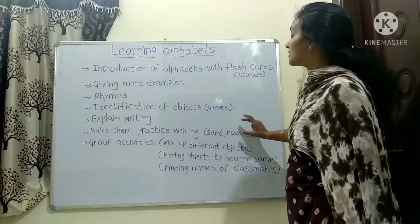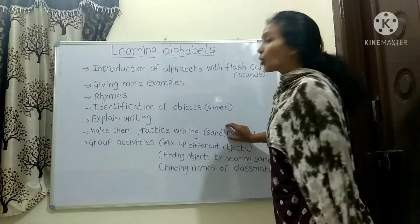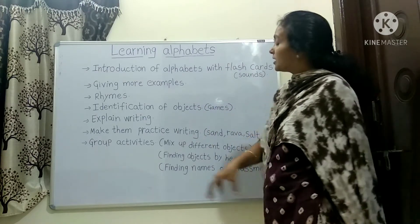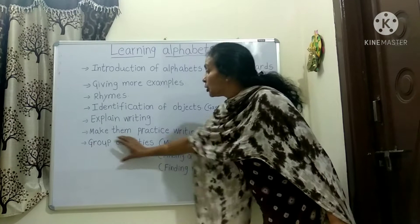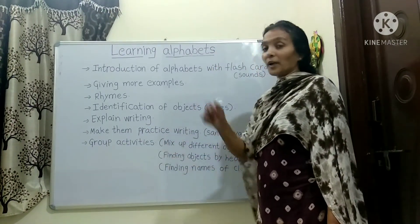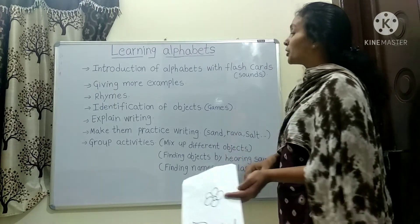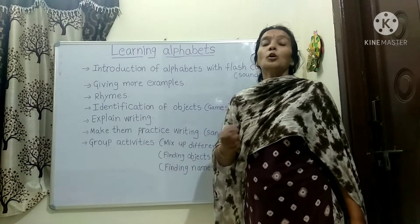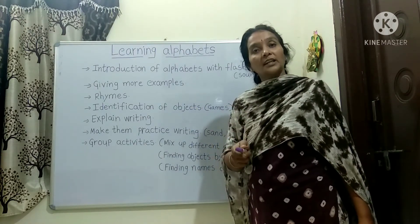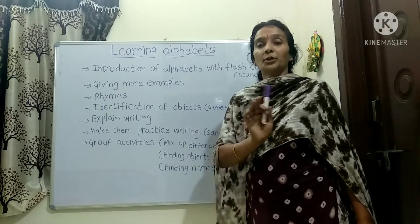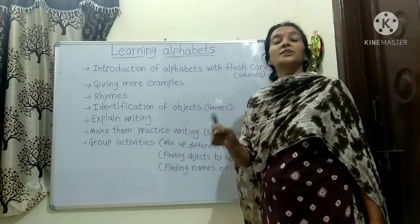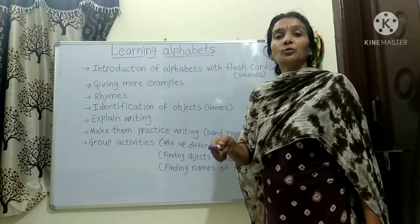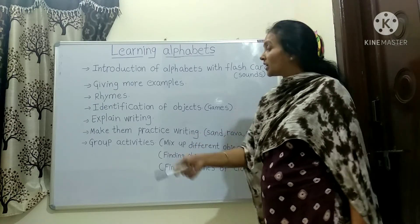After that, writing is over, and we also make them write in the book. Then come the group activities. After explaining four or five alphabets, one day we do revision for the explained alphabets. We do many activities for revision.